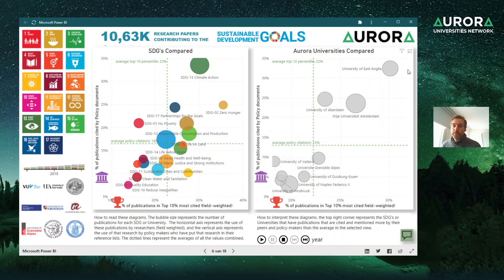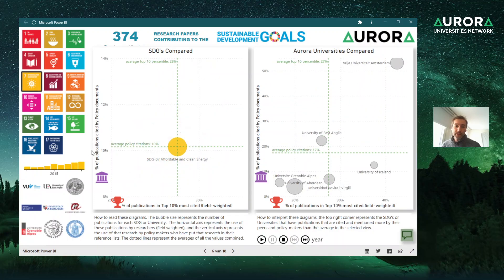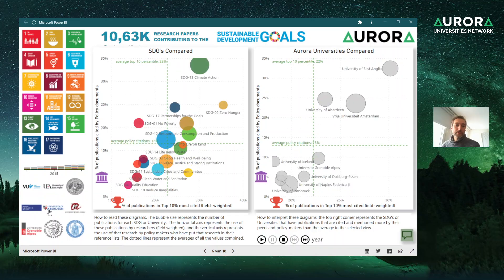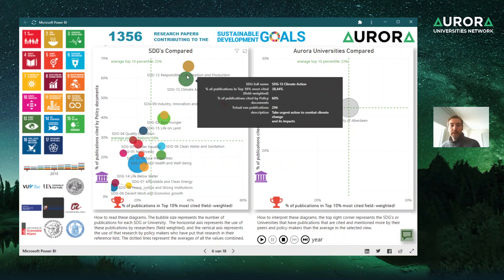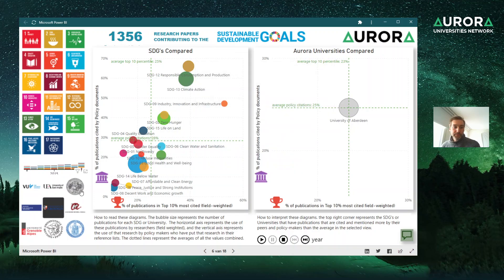If you want to compare universities within Aurora, you can use the filters — for example, filtering down to Clean and Affordable Energy shows one bubble per university so you can see how they compare on this SDG. Clicking on a specific university, such as Aberdeen, shows the profile of that university across the different SDGs.